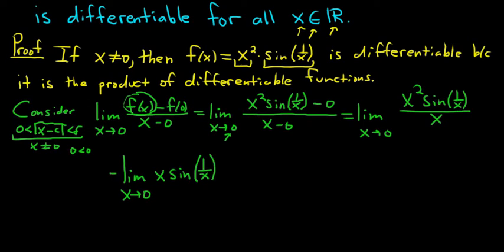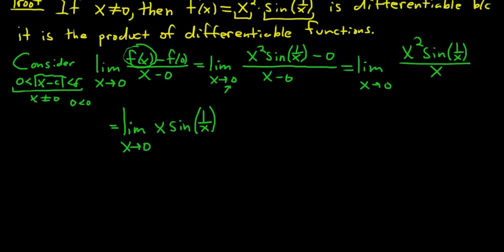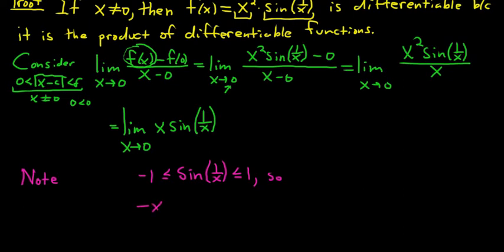Now we just have to show that this limit exists — and it does, it's equal to 0. We'll prove it with the squeeze theorem. Note that sine of 1 over x is bounded: negative 1 is less than or equal to sine of 1 over x, which is less than or equal to 1. Multiplying everything by x, we get negative x is less than or equal to x times sine of 1 over x, which is less than or equal to x.